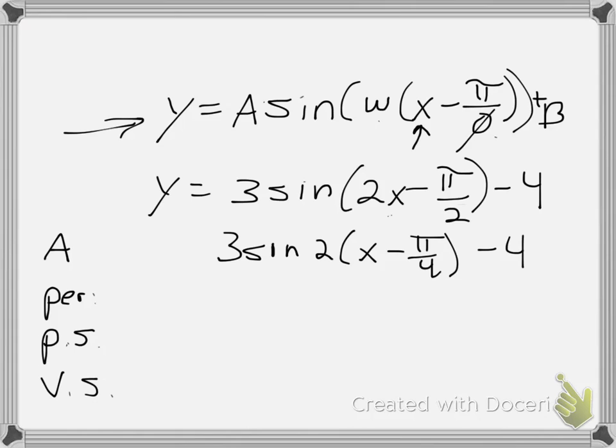And I did this because now it allows us to quickly identify all the important parts. For example, now we look here to find our phase shift, which is π/4, not π/2. Of course, we know our vertical shift here is a negative 4, or 4 down.